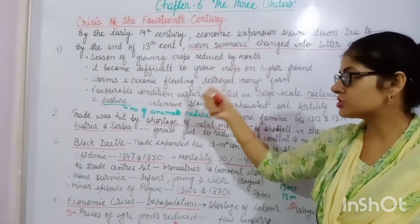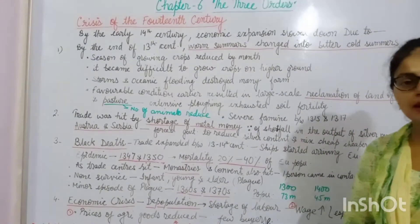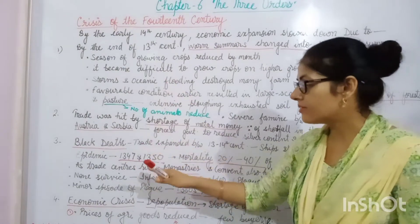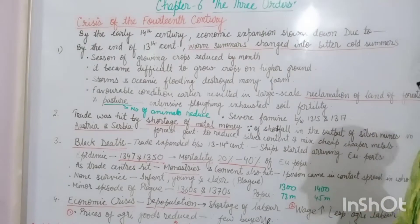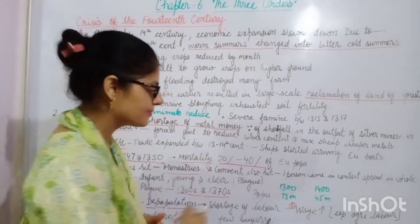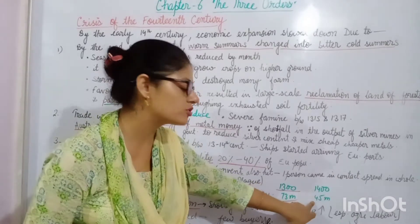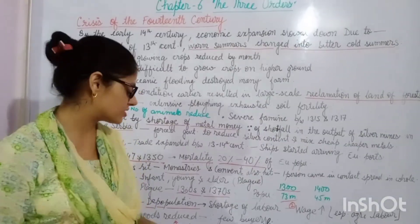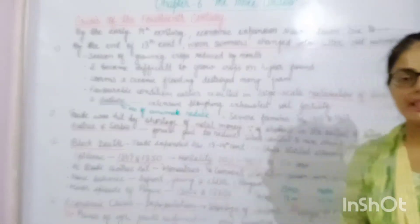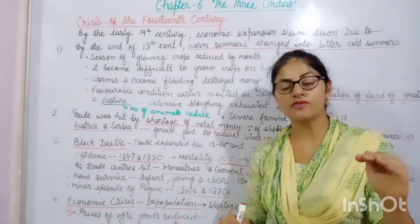So the first crisis was the climatic condition, second was the shortage of metal money, and third was the Black Death. The fourth crisis was the economic crisis. During the 13th century, the population of Europe was 73 million, but by 1400 it had reduced to 45 million. Because of this reduction in population, there was a shortage of labor in Europe, and when something is in shortage, its price rises — so the wage rate of laborers increased significantly.